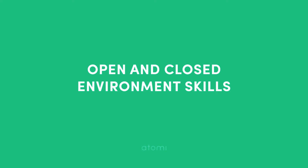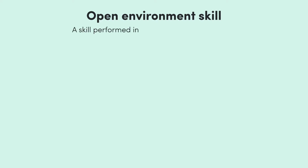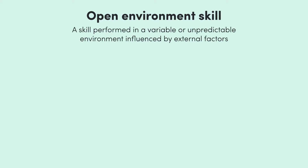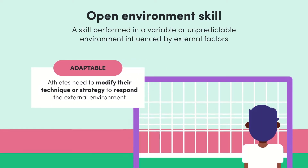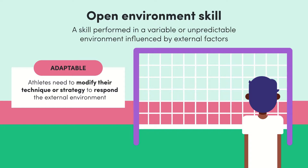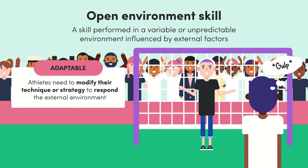Let's start with open and closed skills. An open environment skill refers to a skill performed in an environment influenced by external factors, not just an athlete's own ability. Athletes must be able to adapt to this unpredictable environment, meaning technique and strategy may need to be modified. A great example would be other players or opponents — think about a penalty shooter in soccer who has practiced hundreds of times but now has a goalkeeper in the way.